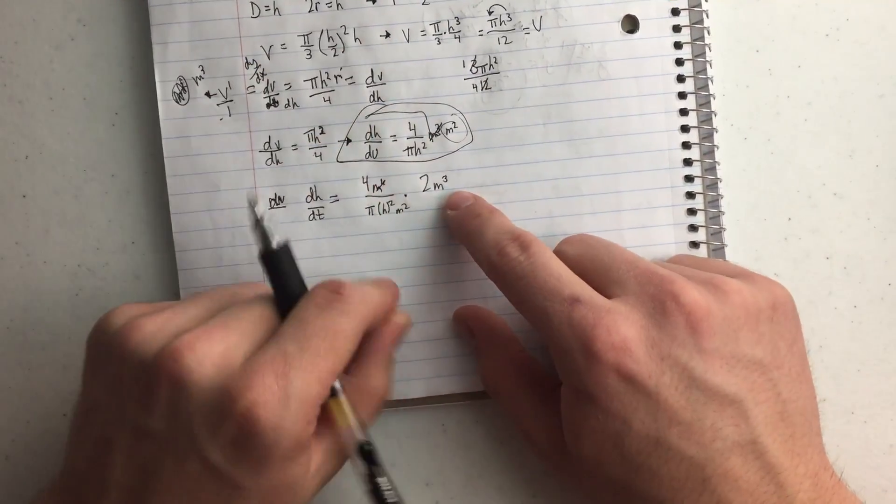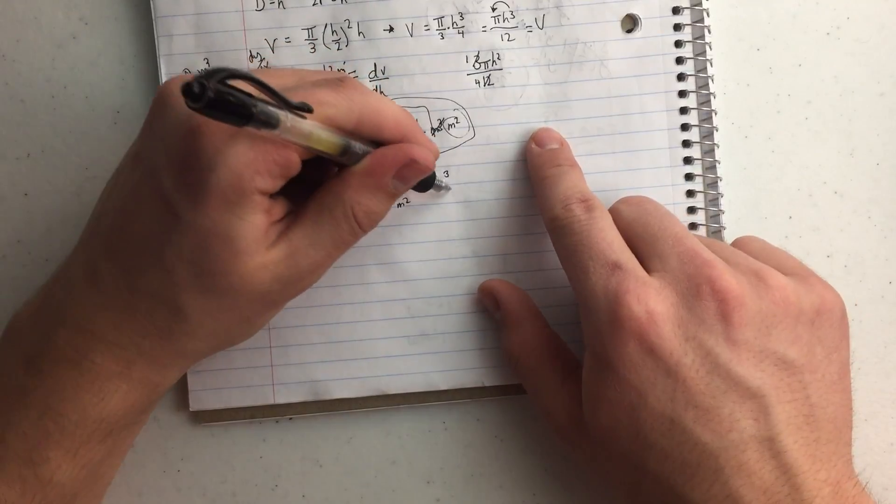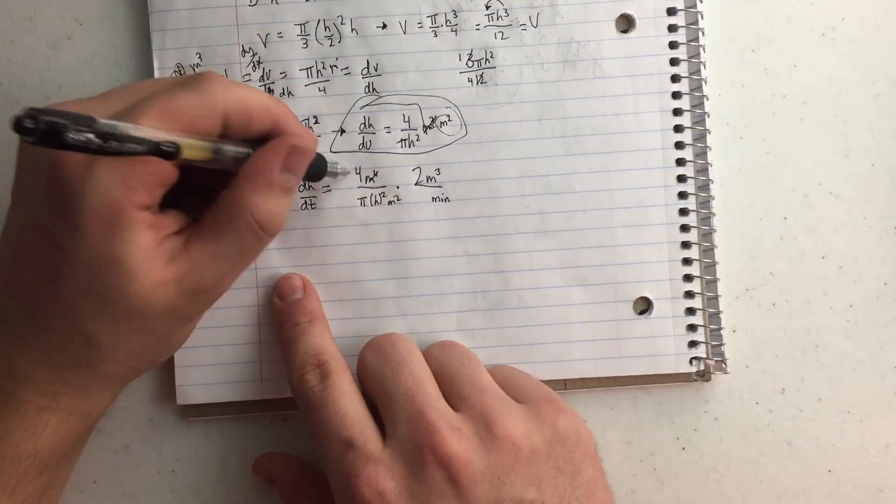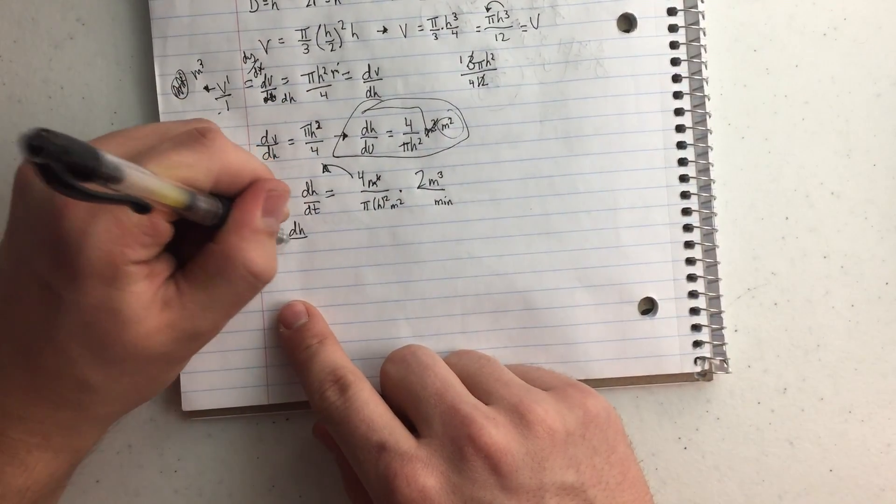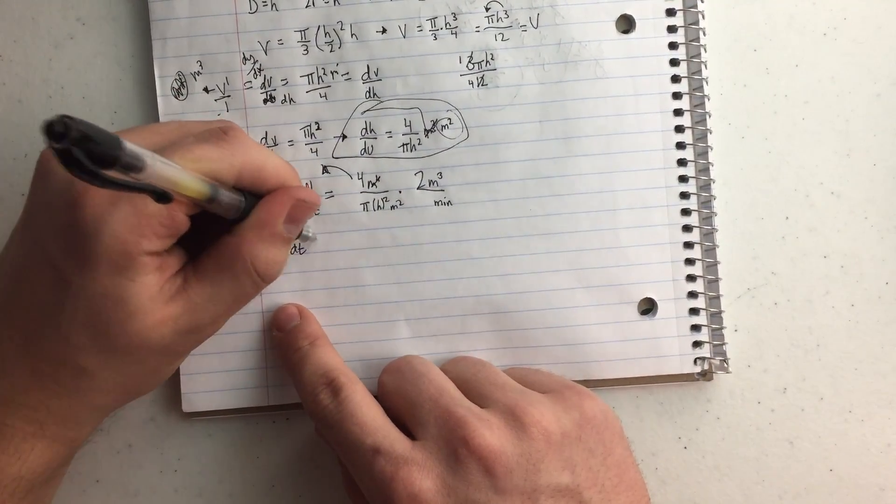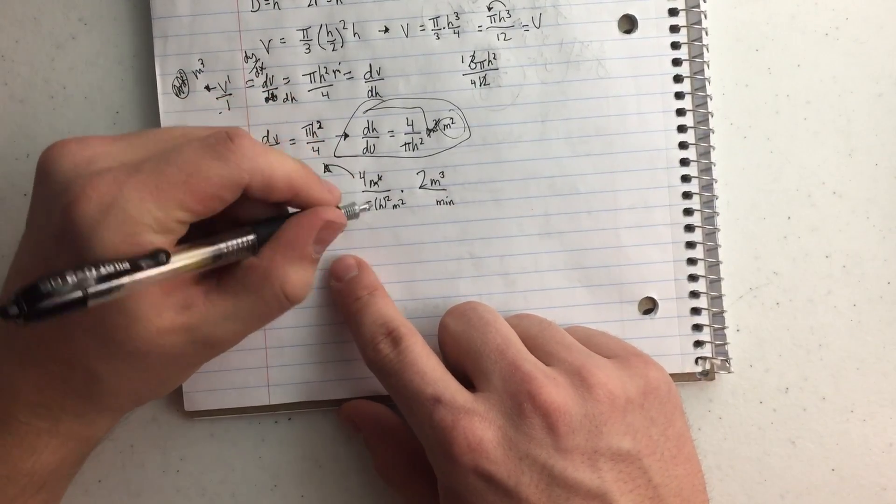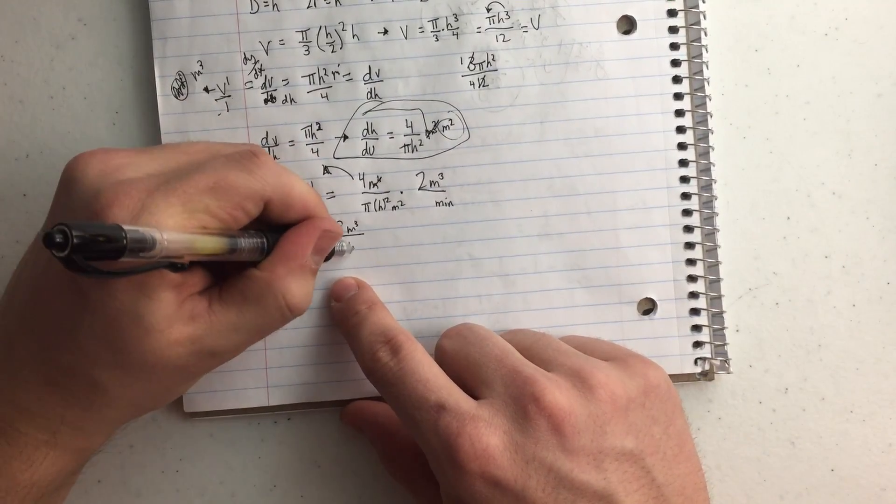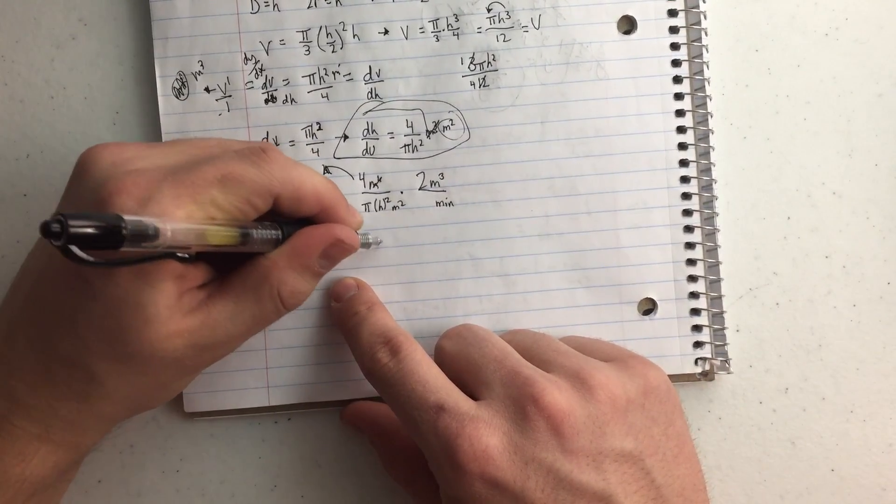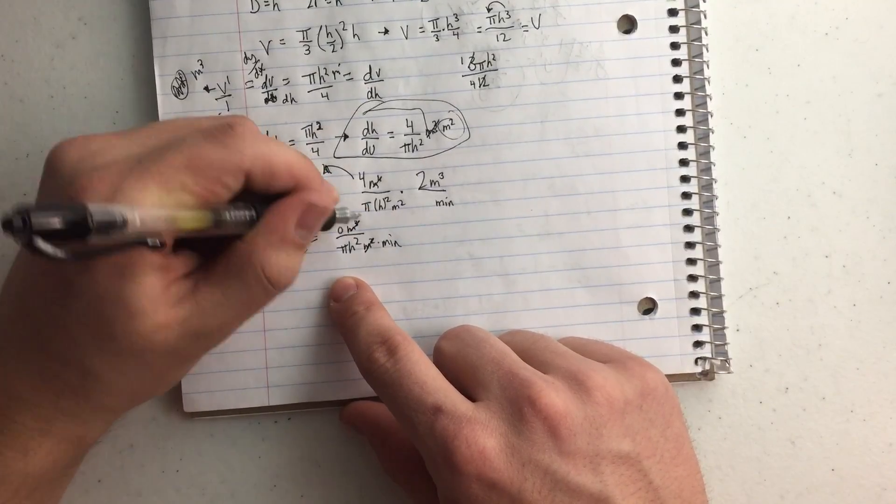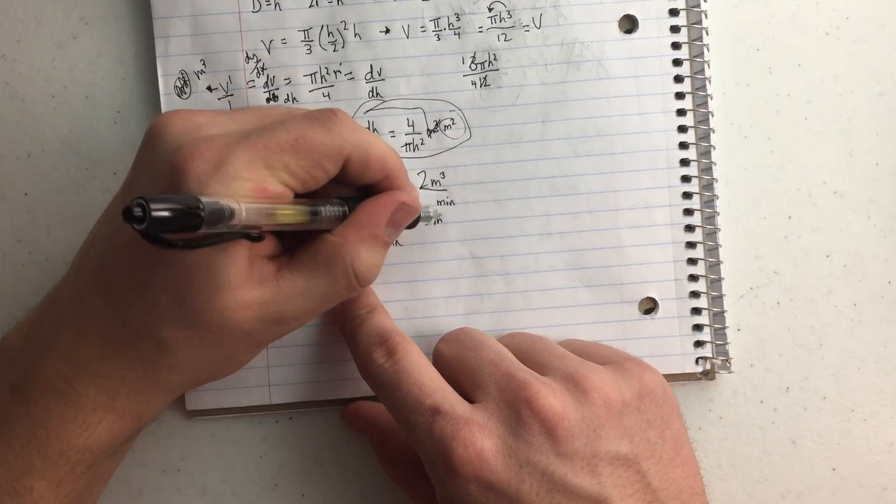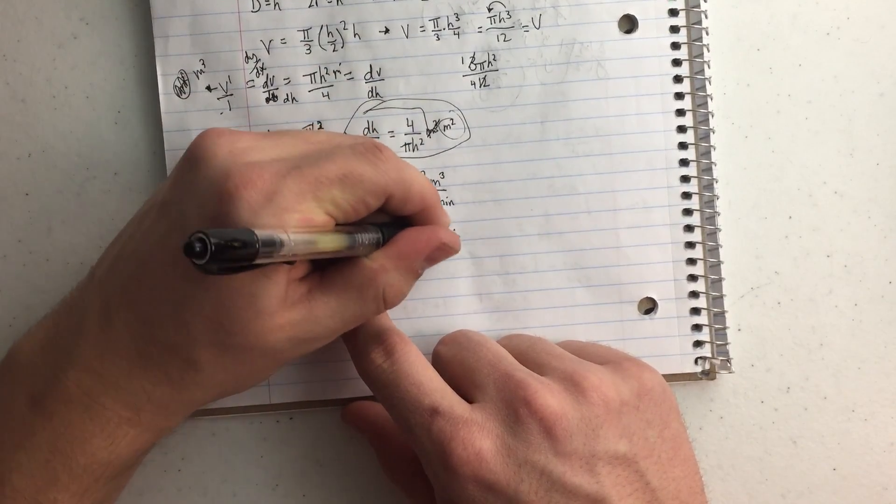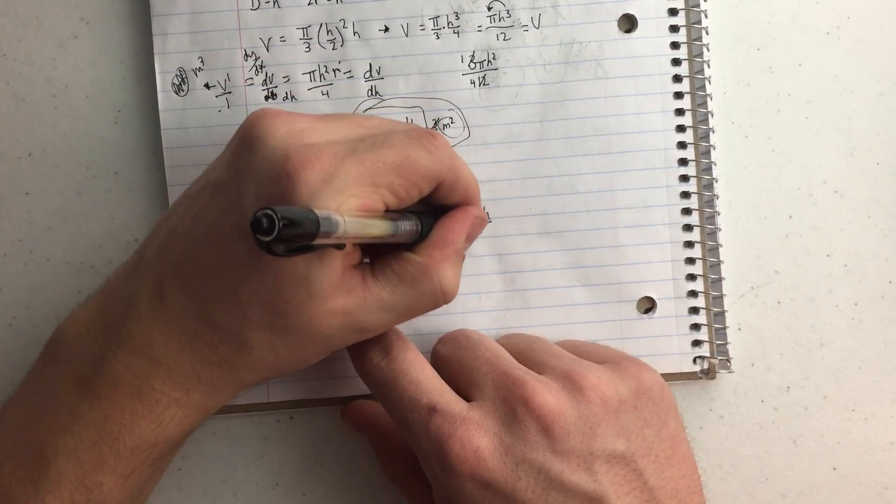So meters squared, and it's going to cancel. This will cancel with that. And then per minute. And now I just multiply. So dh over dt is going to equal 8 meters cubed over pi h squared meters squared times per minute. So the meters will cancel. So I have 8 meters per pi h squared minutes equals the change in the height and the change in time.